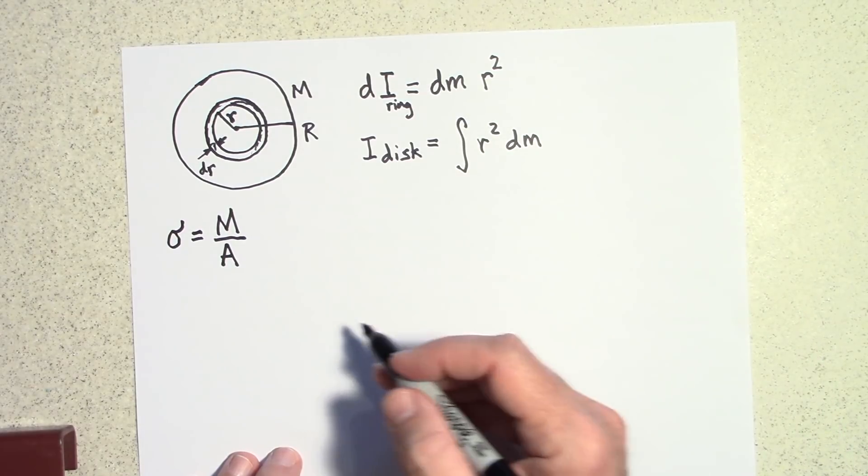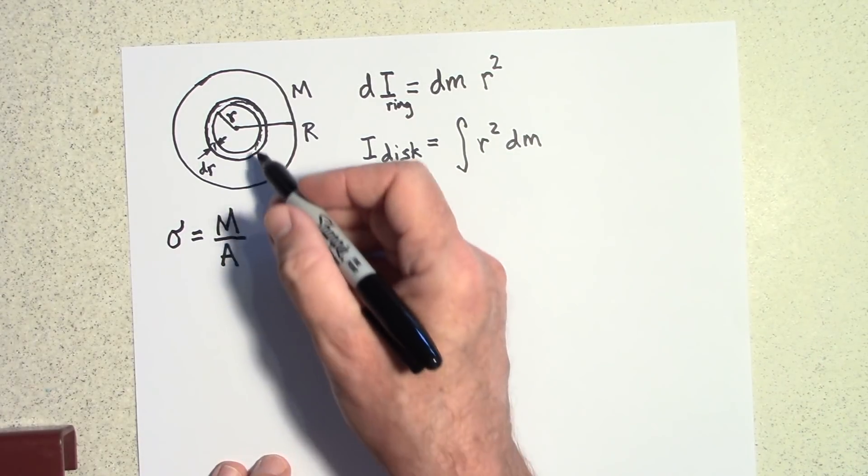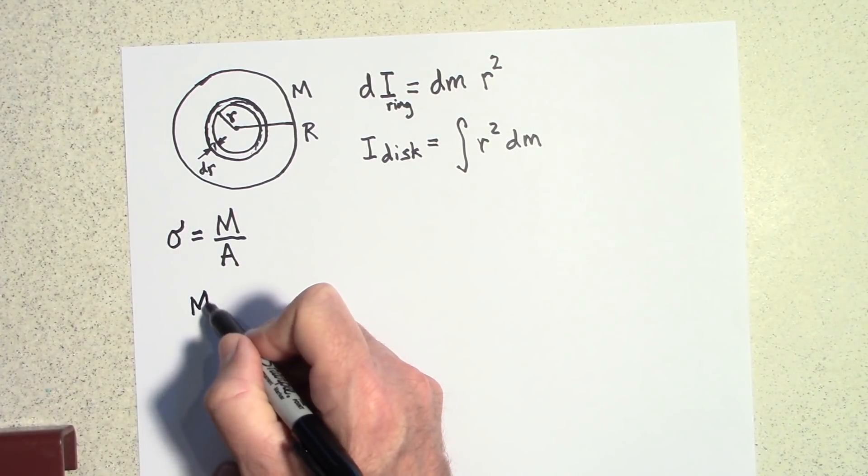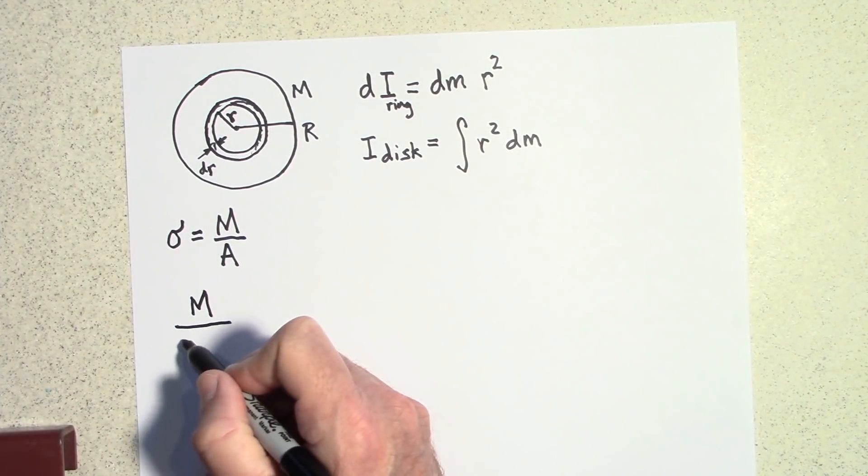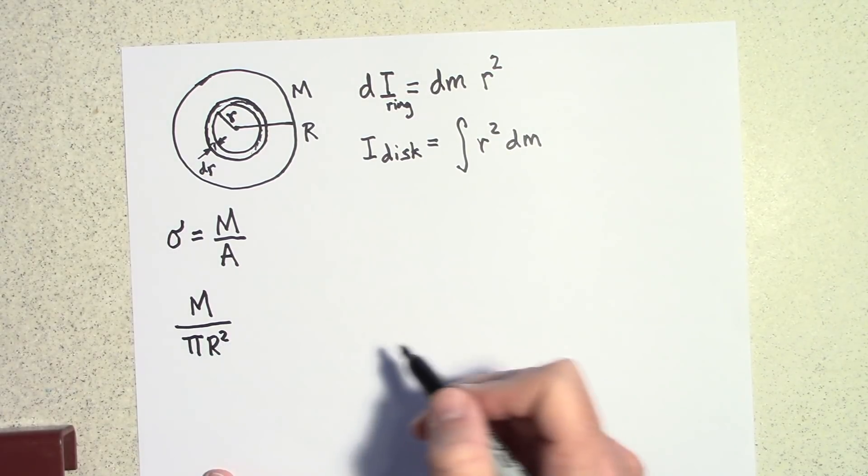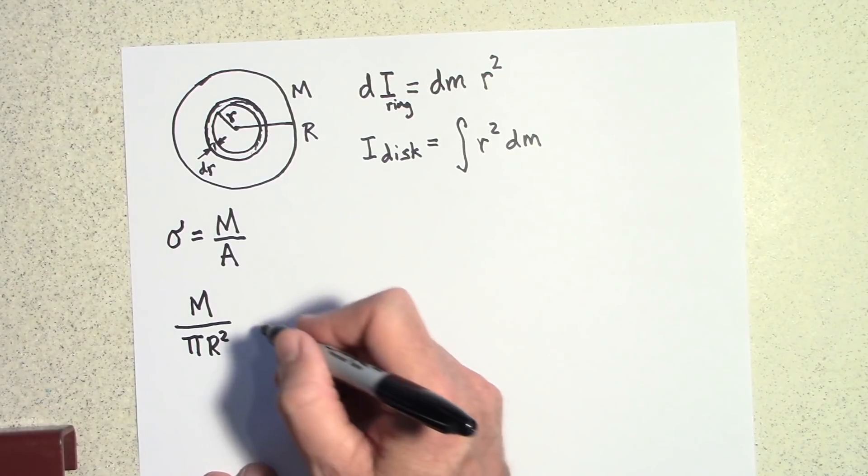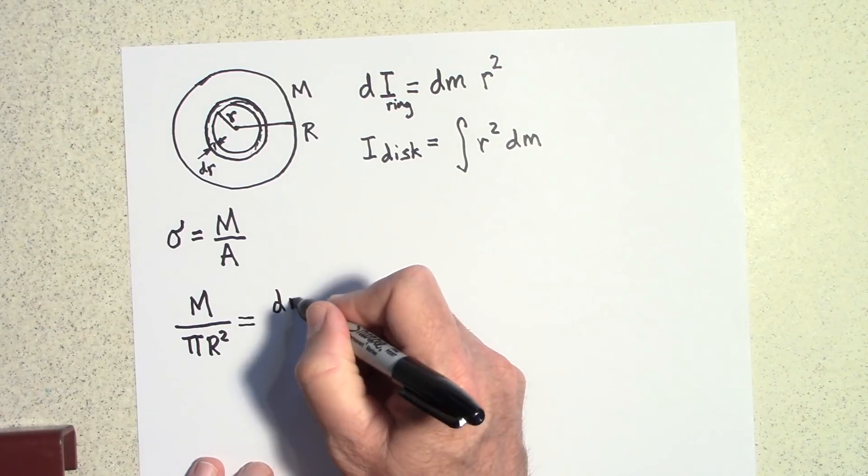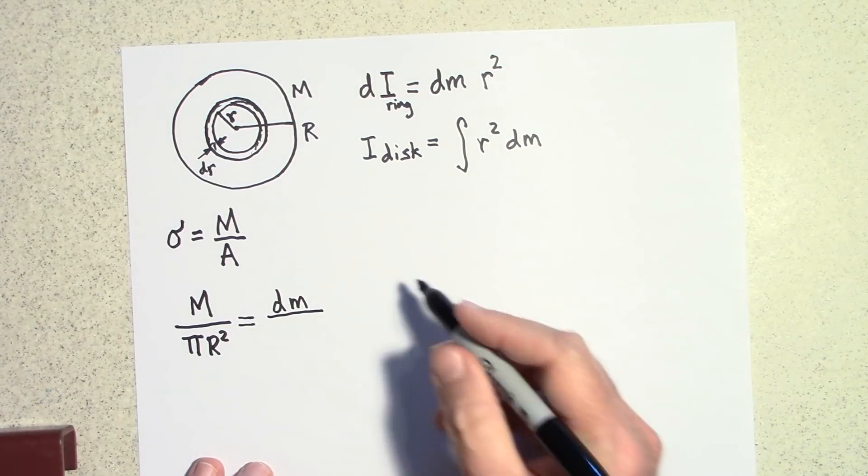And so I can say that the sigma for the whole disc is going to be m over the area pi r squared, pi capital R squared. But that's going to be equal to the sigma for just the ring. So that's going to be dm times its area divided by its area.